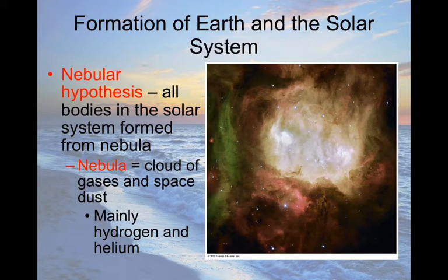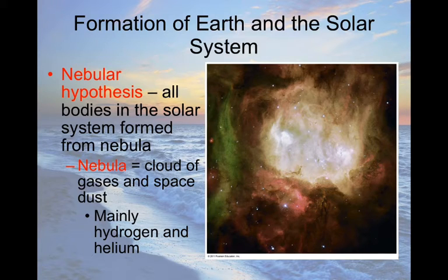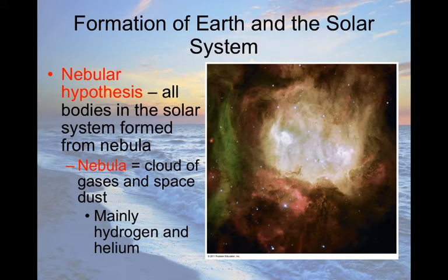As these materials spun they clumped together more and more, which is where the nebular hypothesis comes from — we go from a nebula cloud to clumps, and those become early planets. The nebular hypothesis states that all bodies from the sun all the way out to pseudo-planets like Pluto were all formed from this one dust cloud.